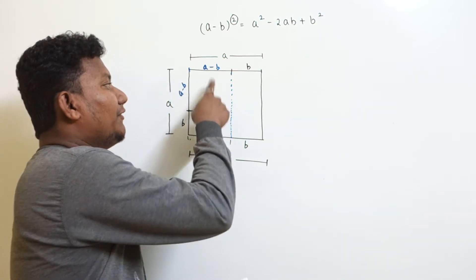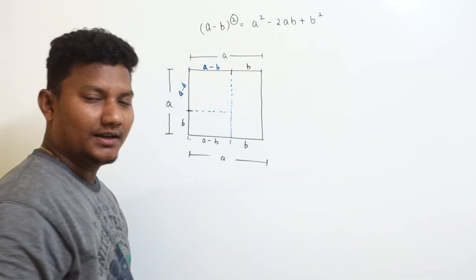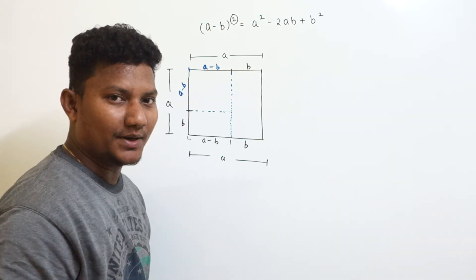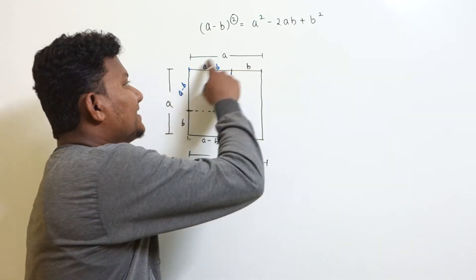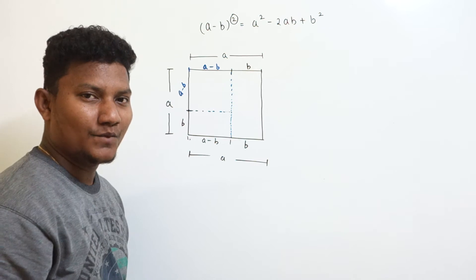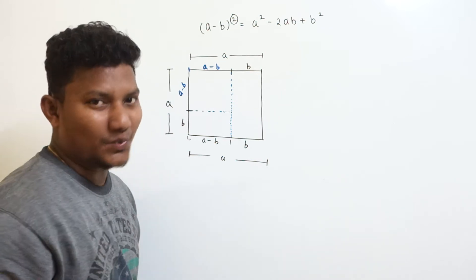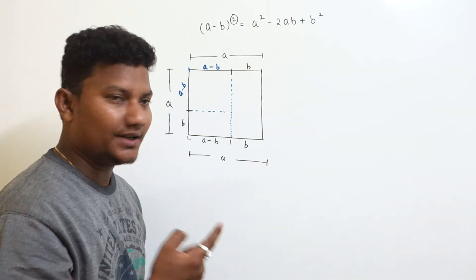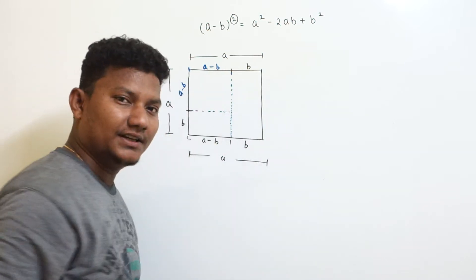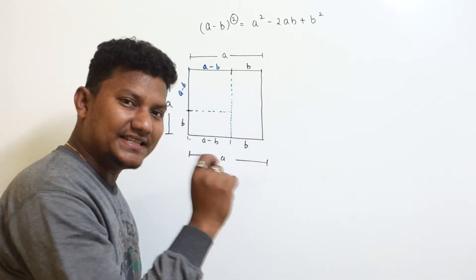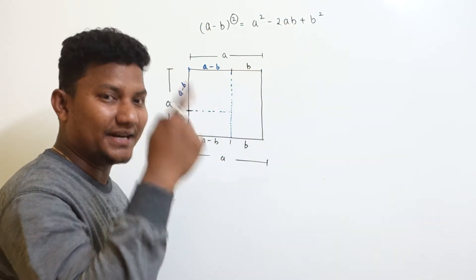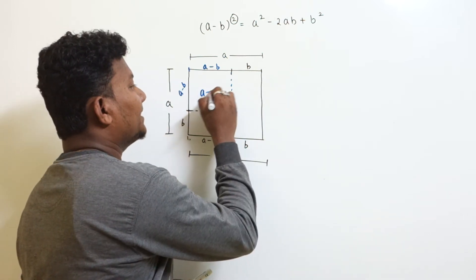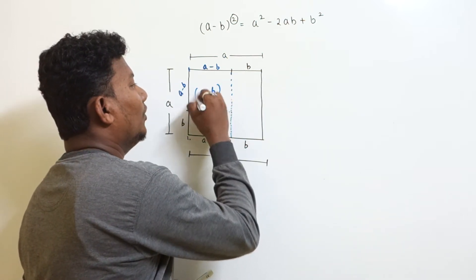Now the first box is in the form of a square because its adjacent sides are equal. The area of a square is side squared, and here the side is a minus b. So the area of the first box is (a minus b) whole square.